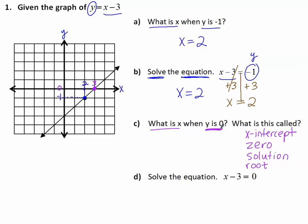So when y is 0, on the line we see x is 3. Part D: Solve the equation x minus 3 equals 0. Similarly, we put 0 in place of y. We look at the graph when y is 0, go over to the line, and see that x is 3. So solving the equation gives us 3. You can check it the algebraic way as well.